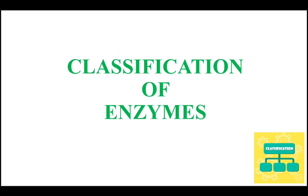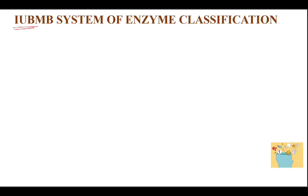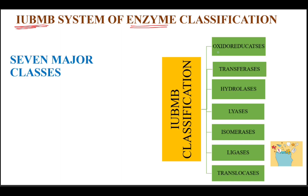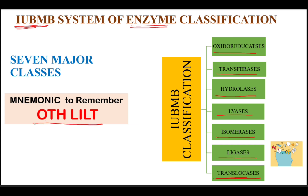Classification of enzymes is the most important topic in the enzymes chapter. The chemical union of biochemistry and molecular biology have classified the enzymes into 7 major classes: Class 1 oxidoreductases, Class 2 transferases, Class 3 hydrolases, Class 4 lyases, Class 5 isomerases, Class 6 ligases, and Class 7 translocases. These 7 classes can be remembered with the mnemonic OTH-LILT.